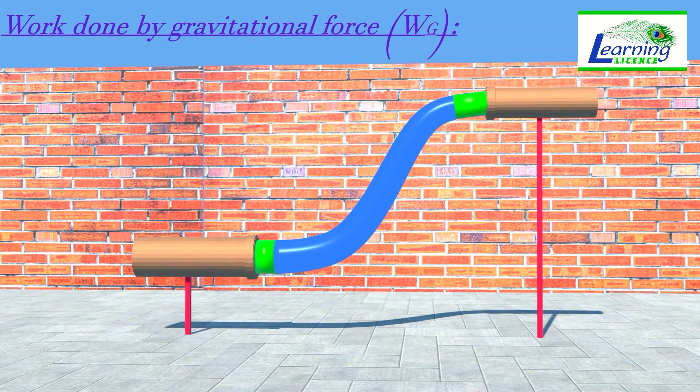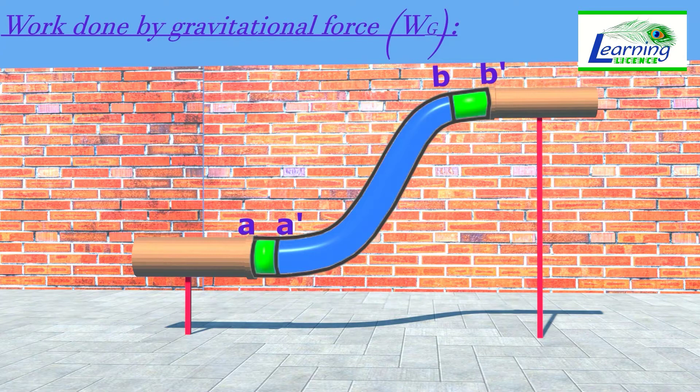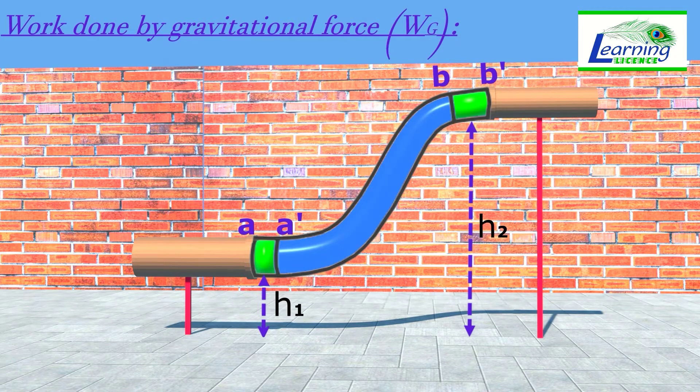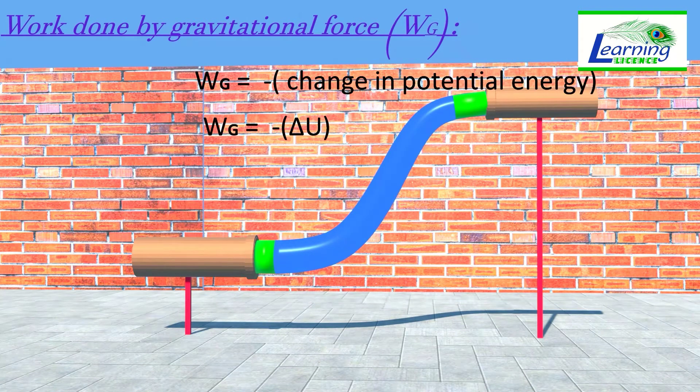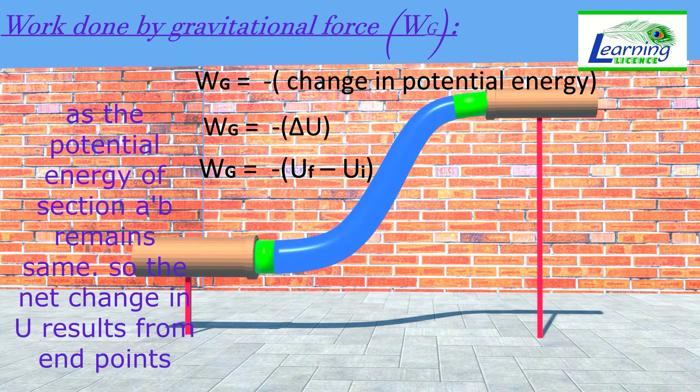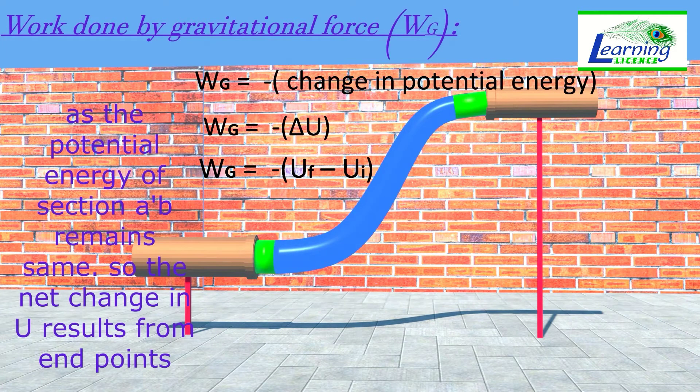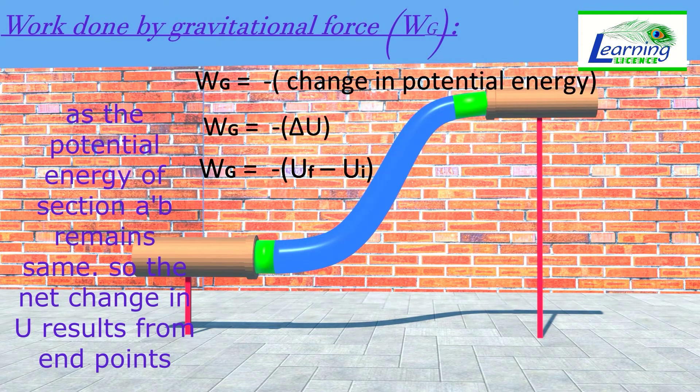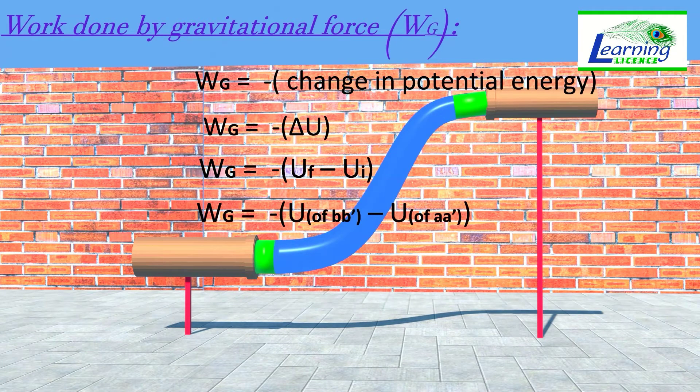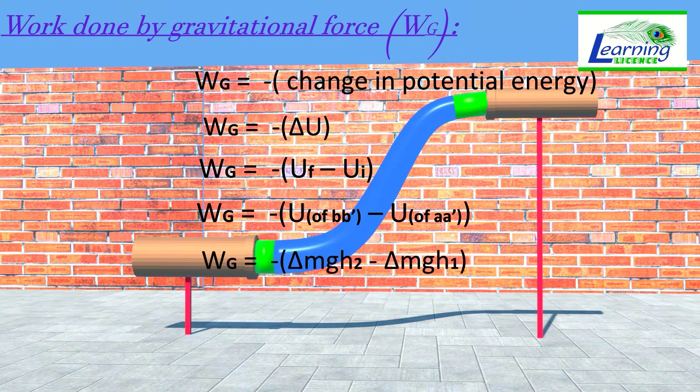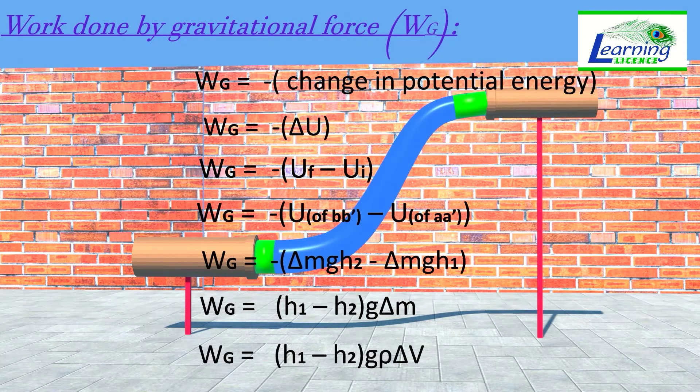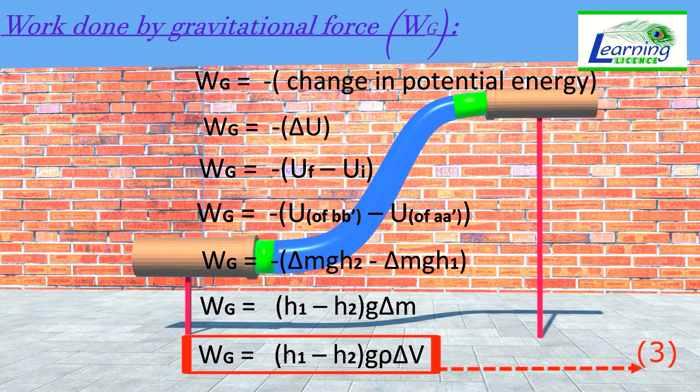Secondly, we calculate work done by gravitational force. Work done by gravitational force on system always equals negative change in its potential energy. As the potential energy of section A dash B remains same, the net change in potential energy results from end points A A dash and B B dash. Put the value of potential energy MGH as mass del M as rho dot del V. This is final expression for WG, and we call it equation 3.